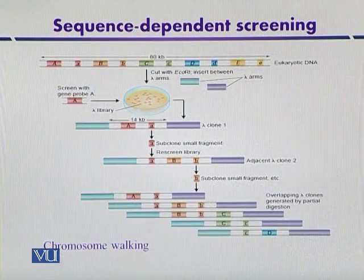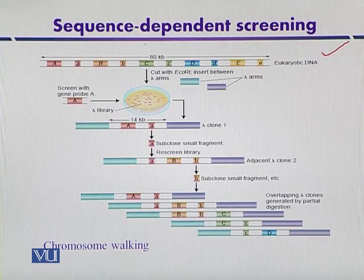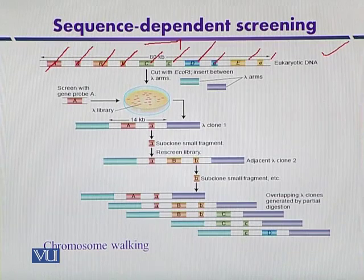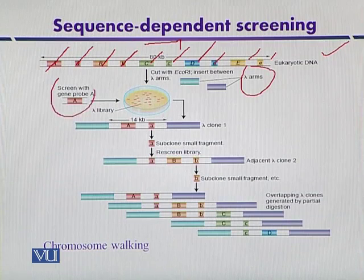This can be explained with the help of a diagram. Here we have eukaryotic DNA that may be around 80 kilobases in length, containing different types of genes like A, a, B, b, C, c, D, d, E, and e. These genes can be digested into different fragments with ECO-R1 enzyme, and these fragments can then be ligated within the arms of bacteriophage lambda. The first fragment corresponding to gene A can then be used to detect the next fragment.